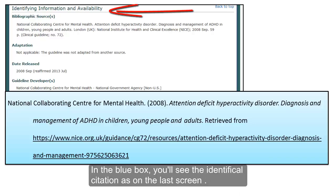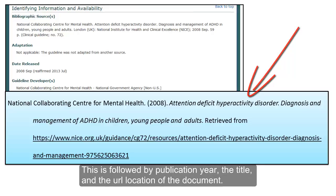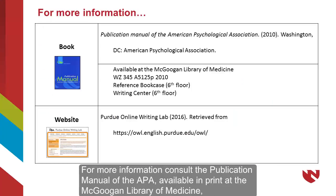In the blue box, you'll see the identical citation as the last screen. The guideline developer is first. This is followed by publication year, the title, and the URL location of the document.